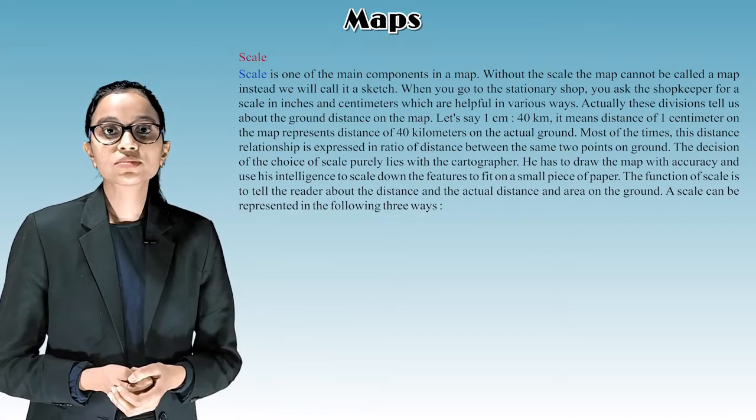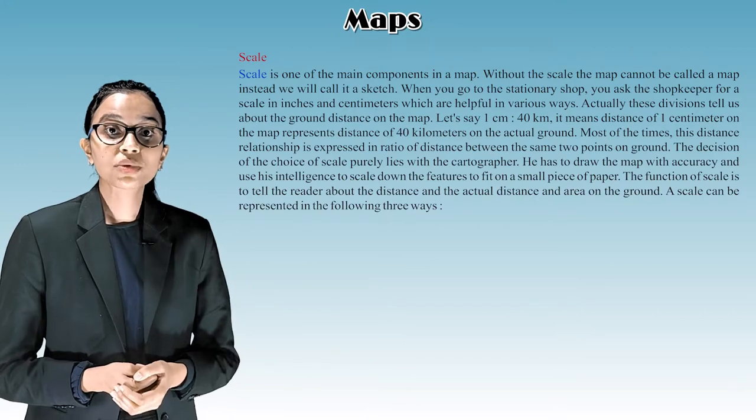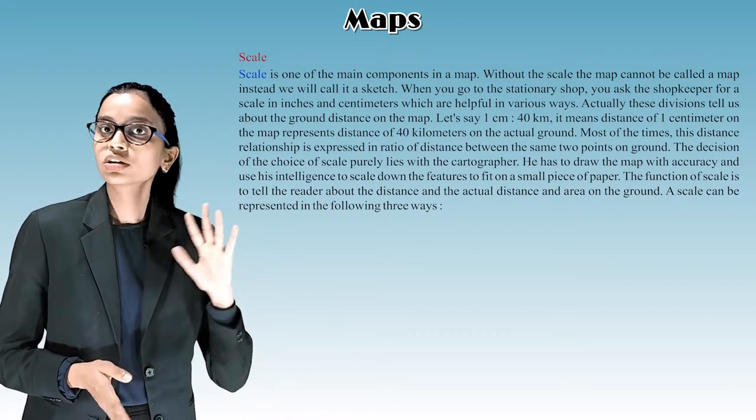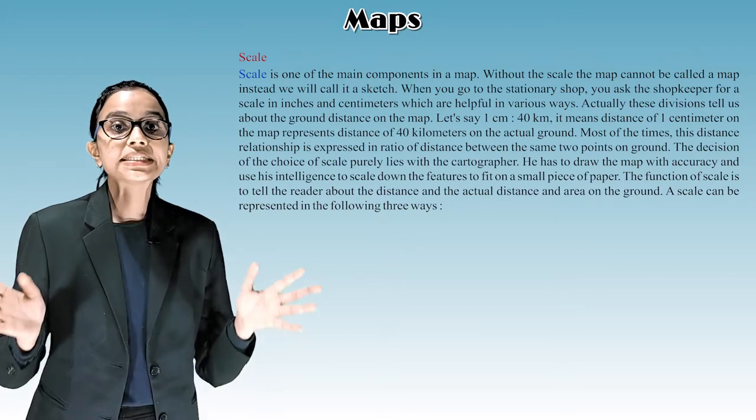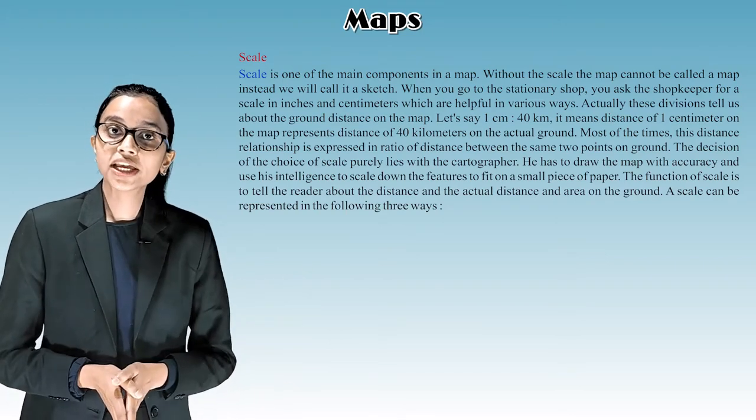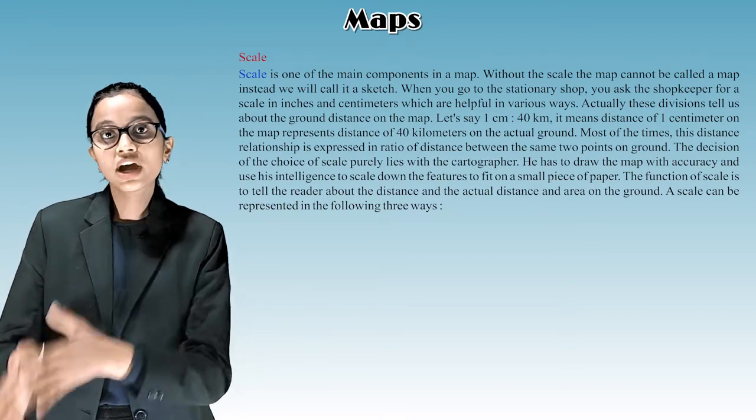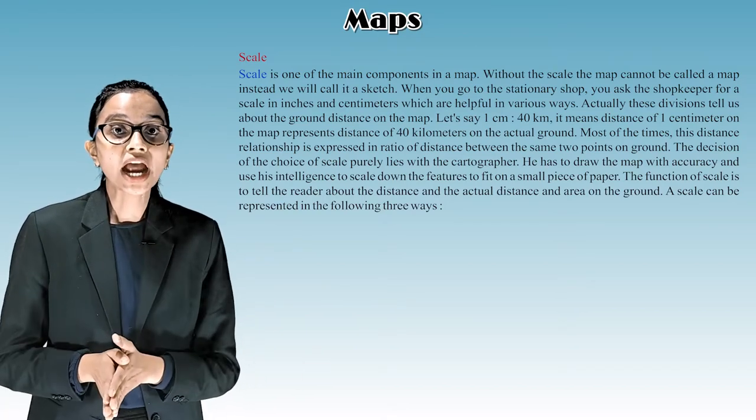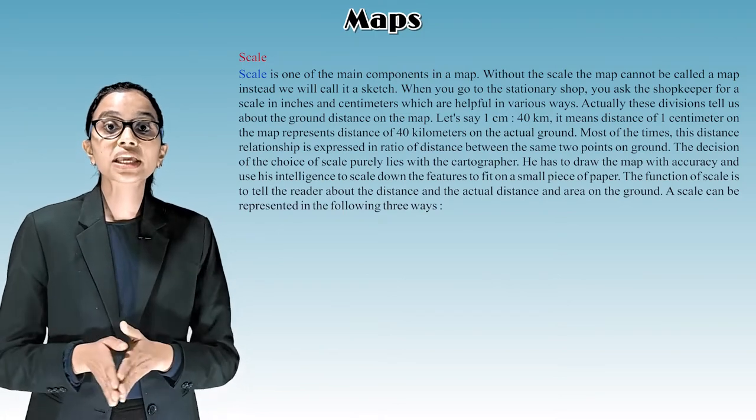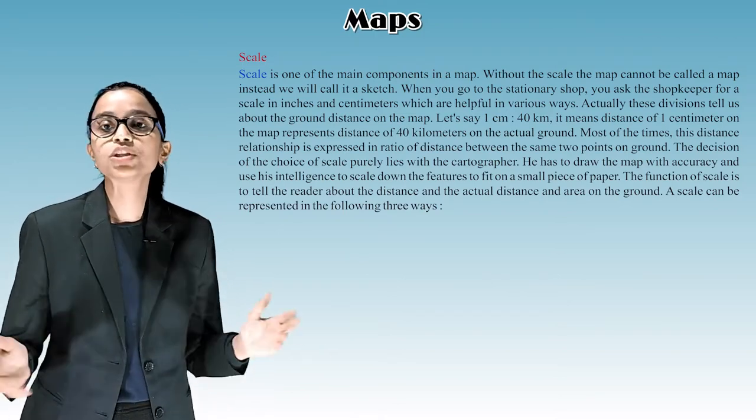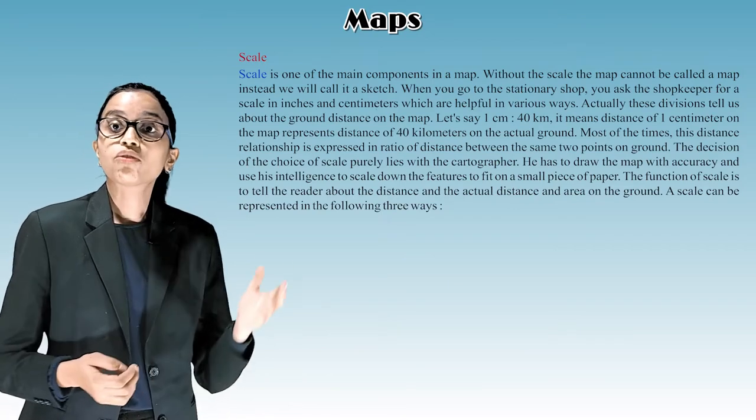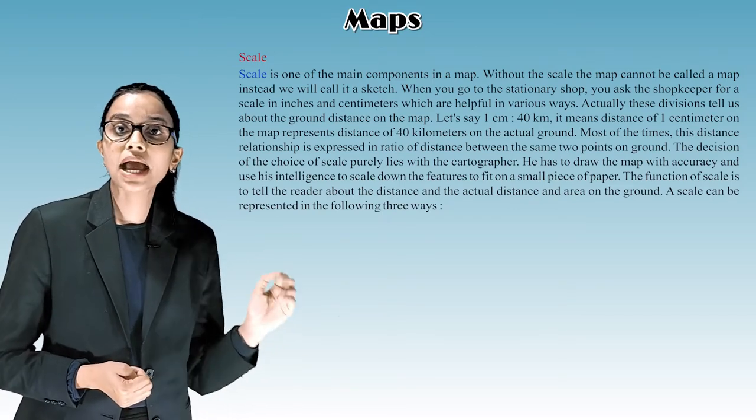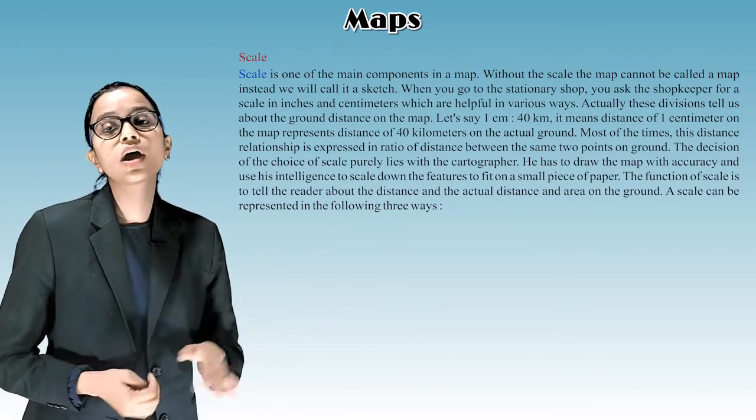It means distance of 1 centimeter on the map represents distance of 40 kilometers on the actual ground. Most of the times, this distance relationship is expressed in ratio of distance between the same two points on ground. The decision of the choice of scale purely lies with the cartographer. He has to draw the map with accuracy and use his intelligence to scale down the features to fit on a small piece of paper.